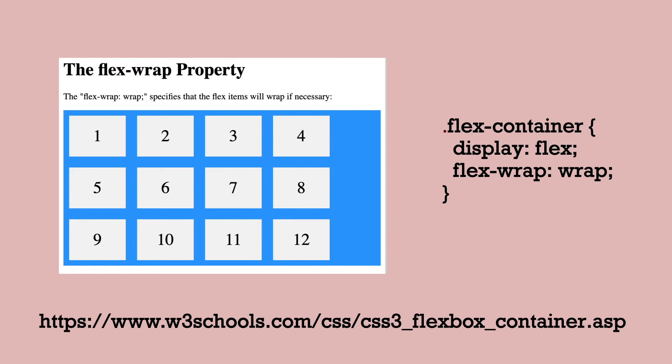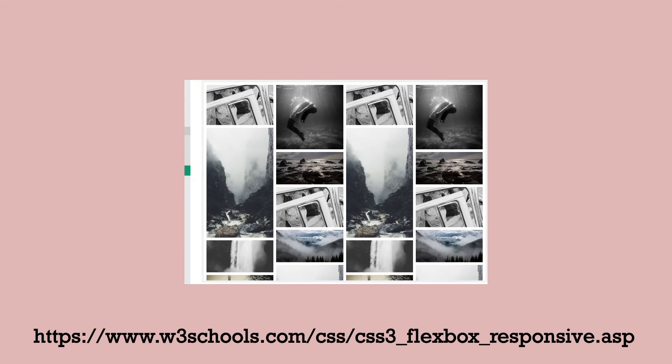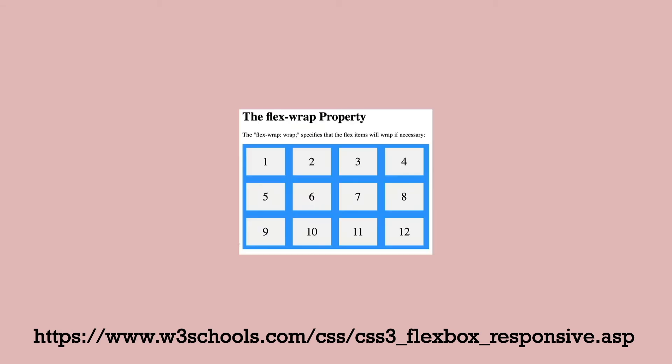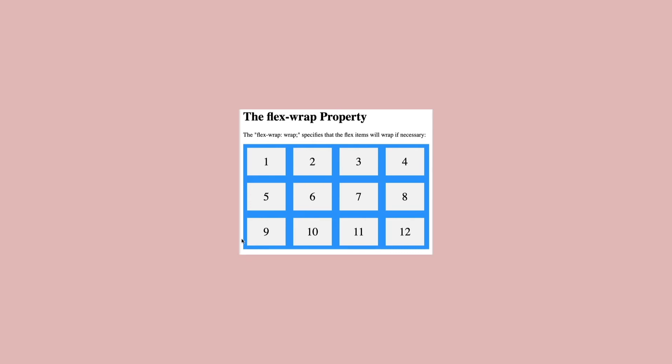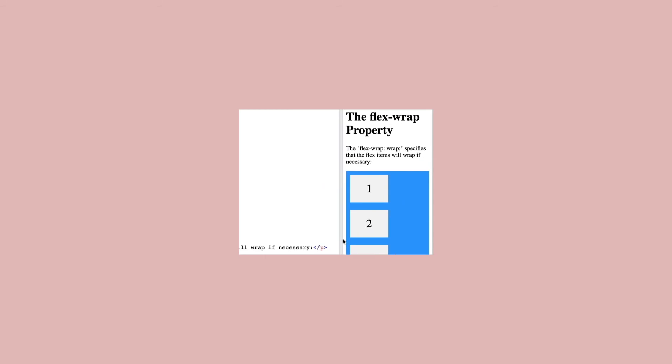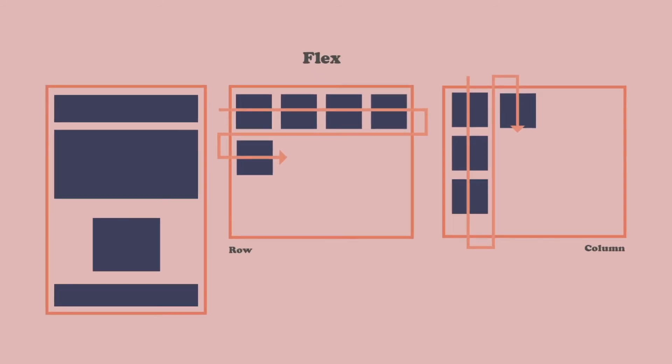Flexbox is another layout method if you want your items to be in a row or column. It uses the display property with a value of flex, and the children of that element will lay out as rows or columns. What's great about flexbox is how responsive it can make your page — great for product or photo galleries where rows can go from four across down to three, two, and one on a phone. I also love flexbox for horizontal navigation links; it does a great job spacing them nicely. But it's not the best for laying out an entire page.